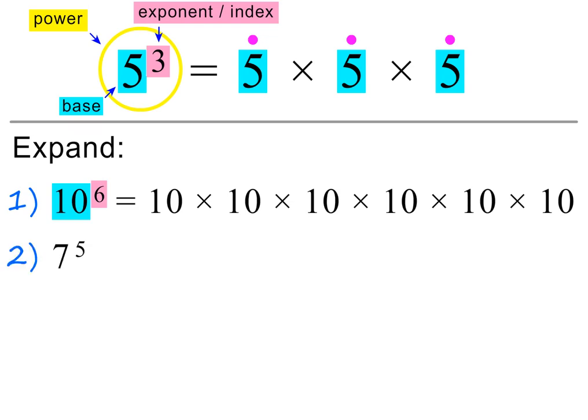In the next example, we are asked to expand 7 to the power of 5. The base is 7 and the exponent is 5, so we need to multiply 7 by itself 5 times.